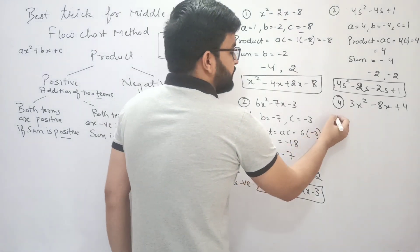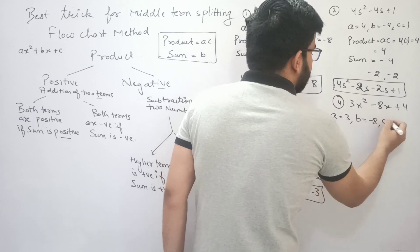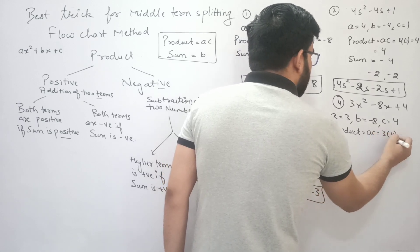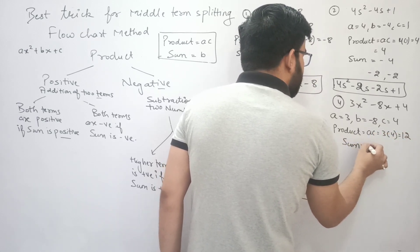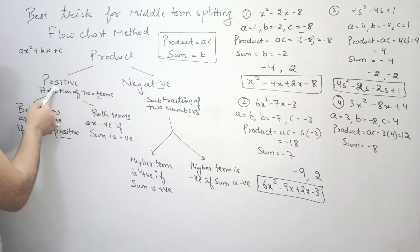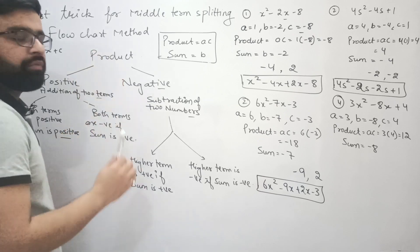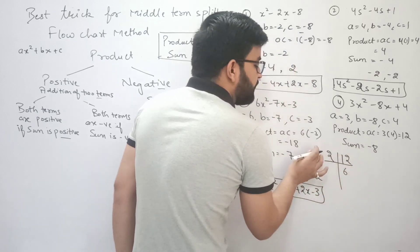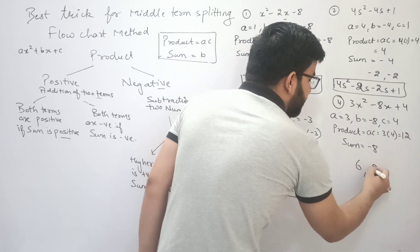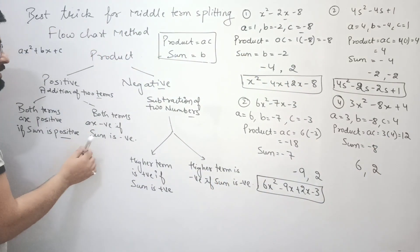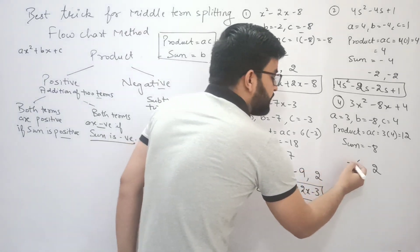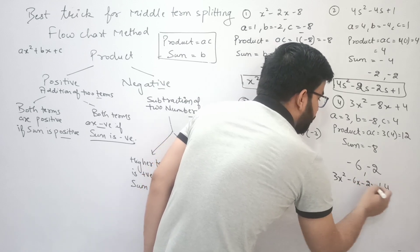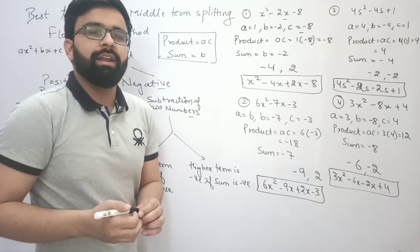Last question: 3x² - 8x + 4. Here a = 3, b = -8, c = 4. The required product is a×c = 3×4 = 12 (positive), and the required sum is -8. Since the product is positive, we add two numbers. Prime factorization of 12 gives 6 and 2; 6 + 2 = 8. Since the sum is negative, both terms are negative: -6 and -2. So the middle term splitting gives 3x² - 6x - 2x + 4.